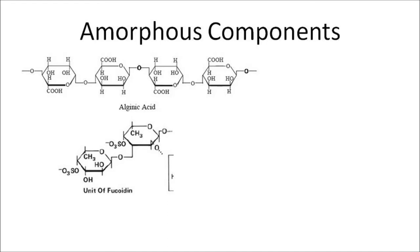Amorphous components occur in the greatest amount in brown algae and red algae, and the polysaccharides of which are commercially exploited. Alginic acid is a polymer of 1,4 linked D-mannuronic acid residues with variable amounts of L-guluronic acid, present in intercellular spaces and cell walls of brown algae. Fucoidin also occurs in brown algae and is a polymer of L-fucose sulfated at the fourth carbon, as indicated by the -OSO₃⁻ groups visible in the structure.